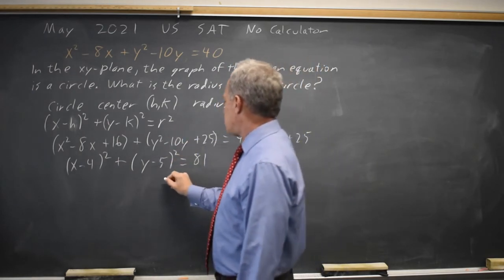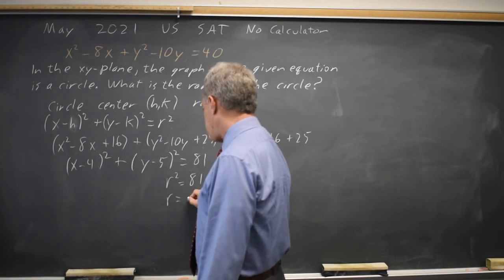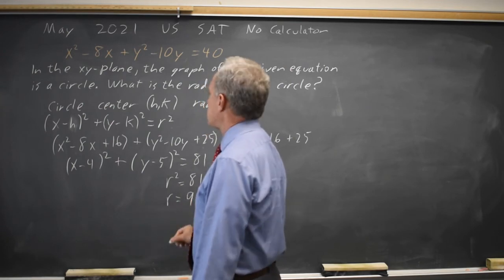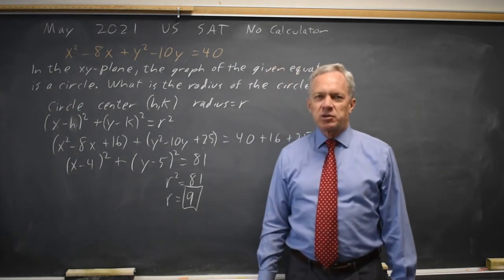From our standard equation, we see that r² equals 81, so r is the positive square root of 81, which is 9. They're asking for the radius of the circle, and that is the quantity that we found.